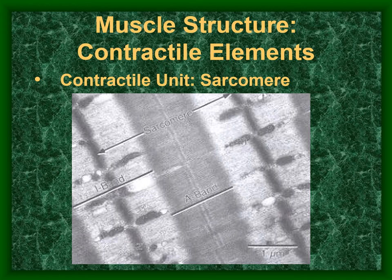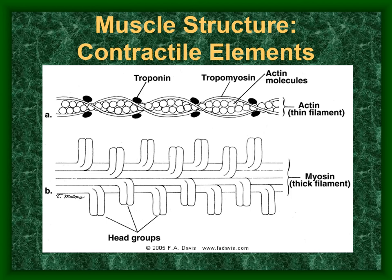Here is an electron micrograph of sarcomeres in real muscle tissue. The myosin myofilament is the larger of the two, with myosin head groups that move and create muscle contraction. At rest, tropomyosin on the actin myofilament hides the binding site from the myosin head so they are not electrostatically bound.